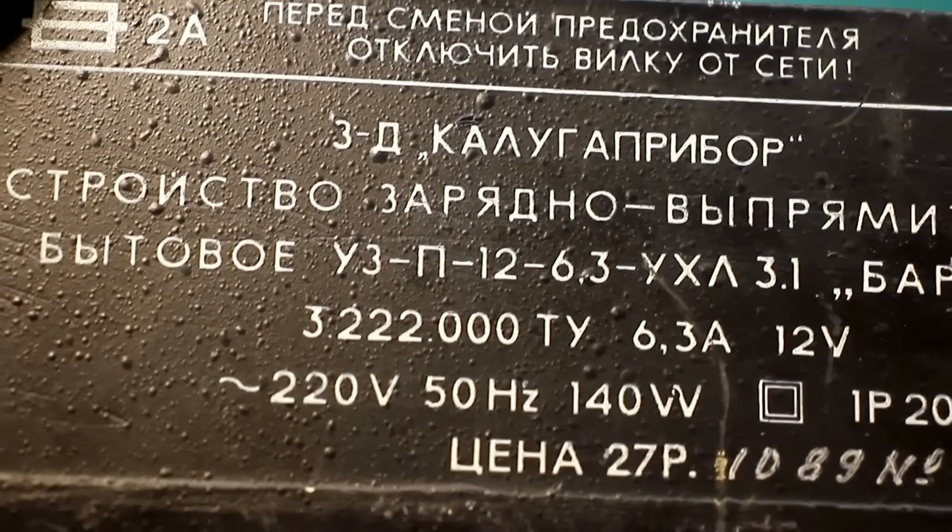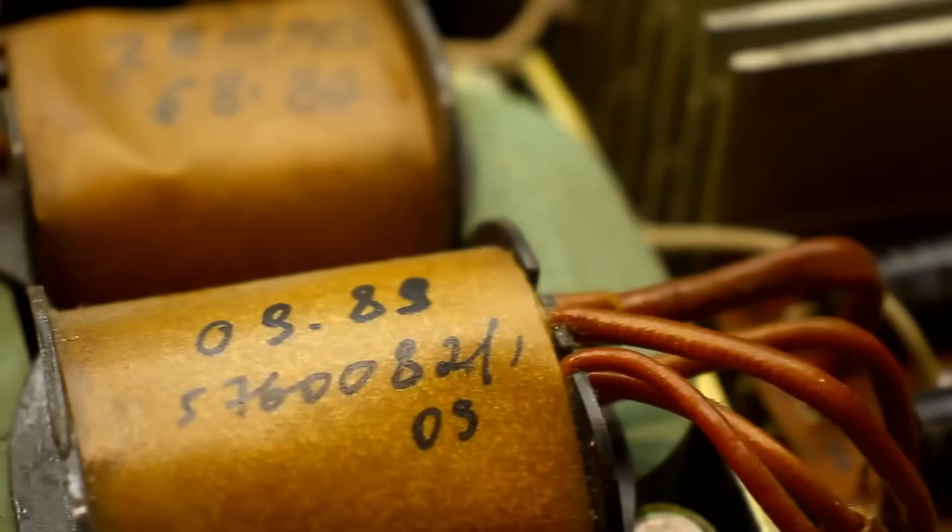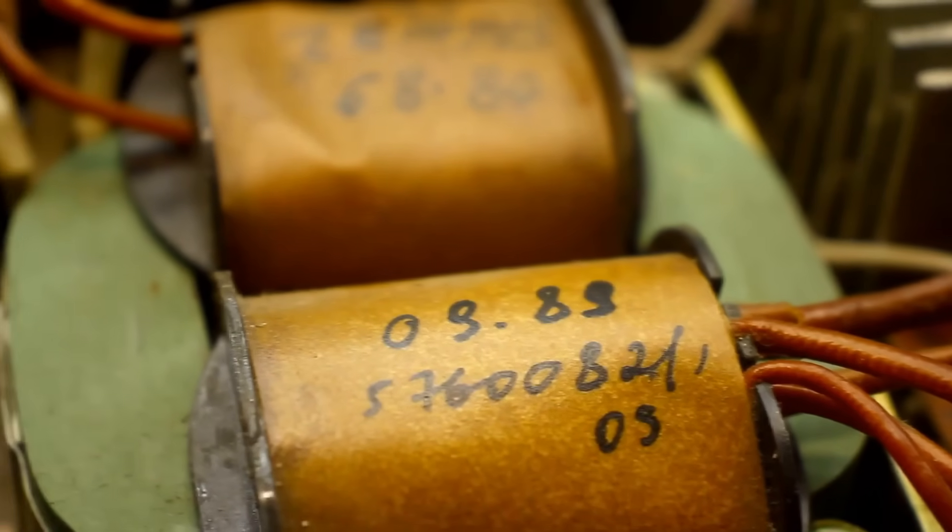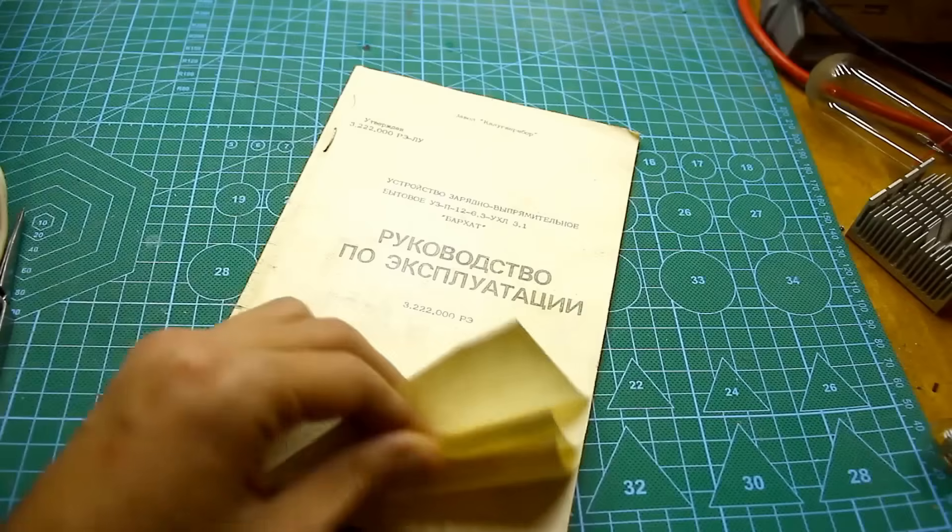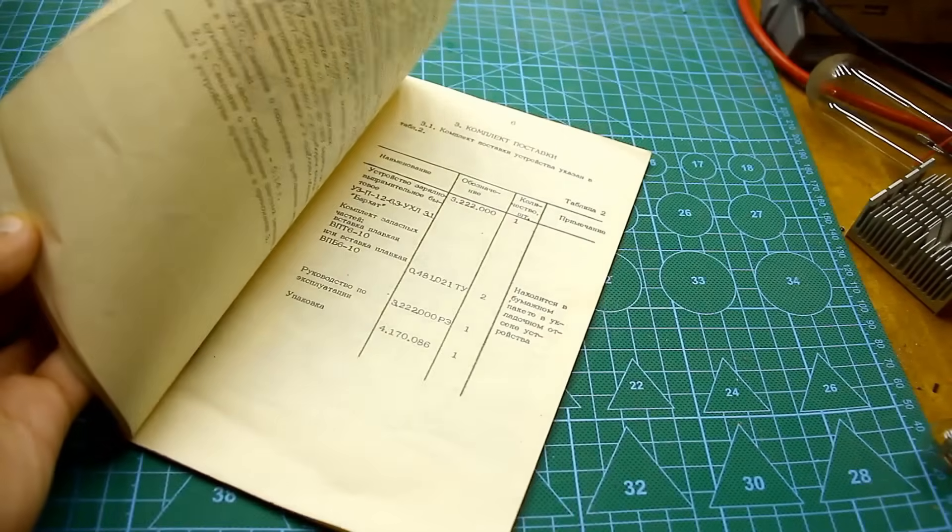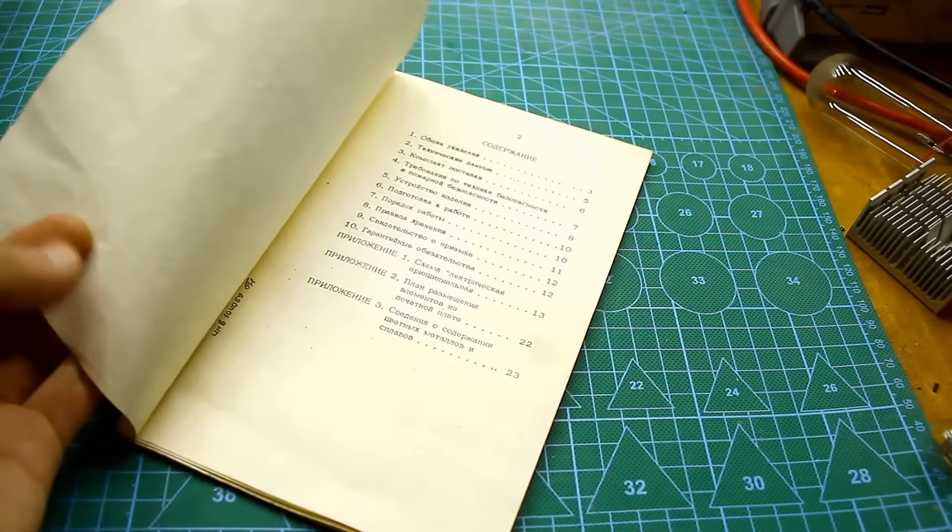Apparently, Grandpa either used this device infrequently or very carefully. Both the wires and the casing are like new. The set included a manual, and it's a work of art. This is how instructions should be written. Of course, there are some typos, but those are minor details.